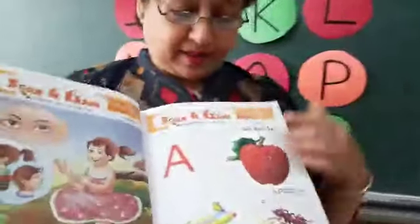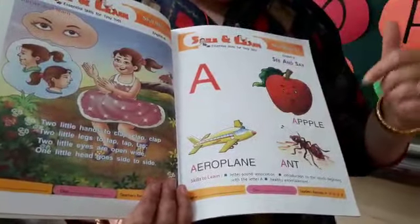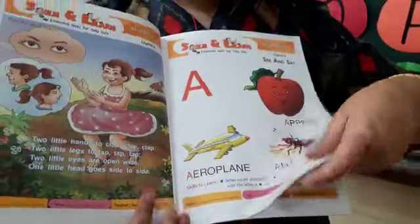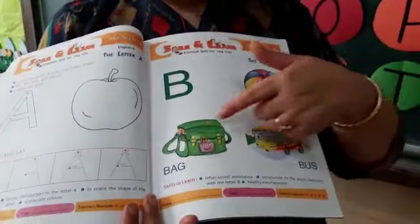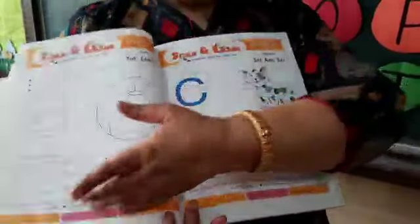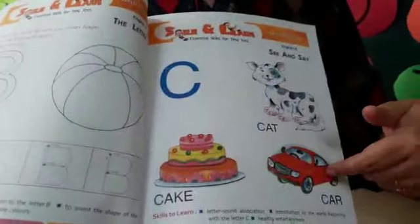Which letter is this? A, A for apple, aeroplane, ant. B, B, ball, bag, bus. C, cat, cake, car.